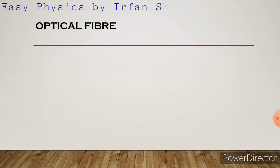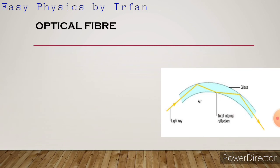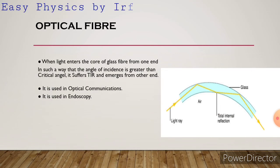Now we discuss another example of total internal reflection: optical fiber. One of the most important applications of total internal reflection is the optical fiber. Observe the picture carefully. When light enters the core of a glass fiber from one end such that the angle of incidence is greater than the critical angle, it suffers total internal reflection and emerges from the other end.